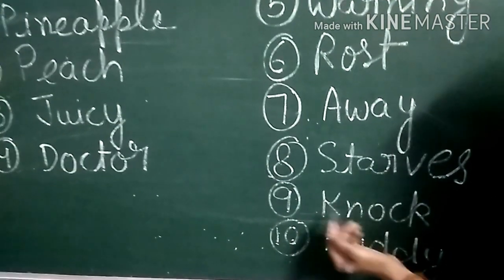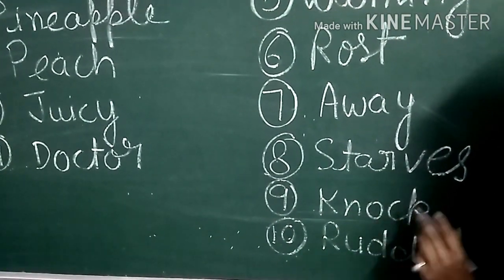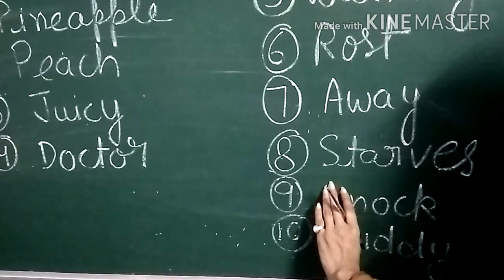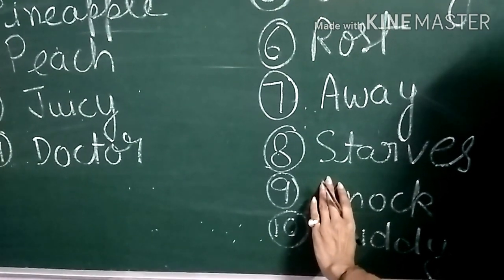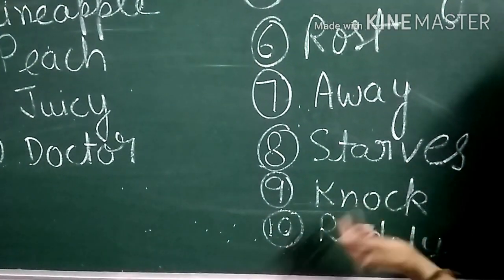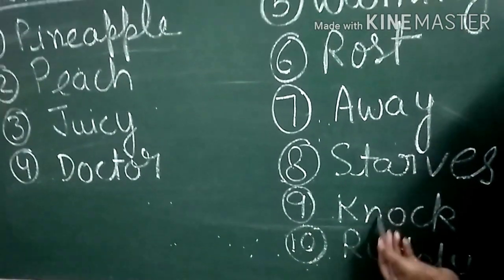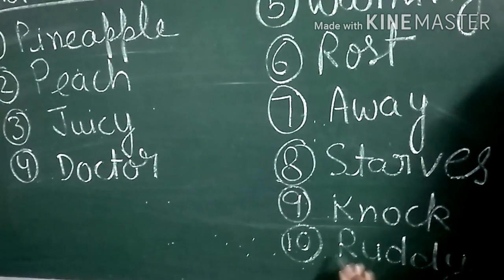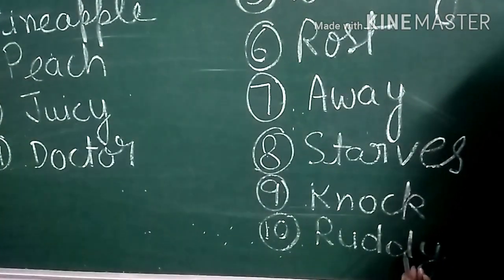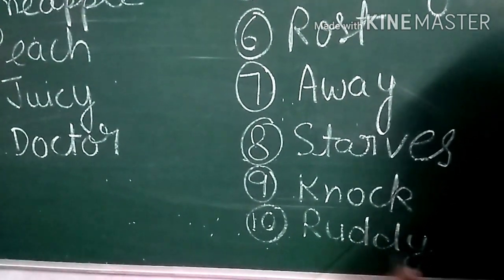हम लोग लिखते हैं Knock — यानि K-N-O-C-K. जब बड़ बोलते हैं तो हम लोग K को hide कर देते हैं — N-O-C-K. लिखा जाता है K, सिर्फ बड़ बोले जाता है — Knock. R-E-A-D-Y — Ready.